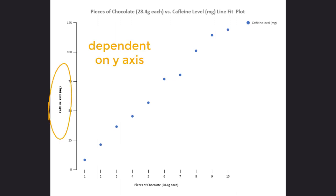From just looking at the graph, we can see a clear positive correlation, which is expected as we know that every piece of chocolate contains a certain amount of caffeine. But how do we calculate the numerical relationship between the two variables?